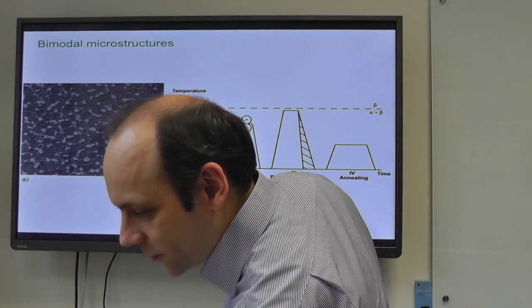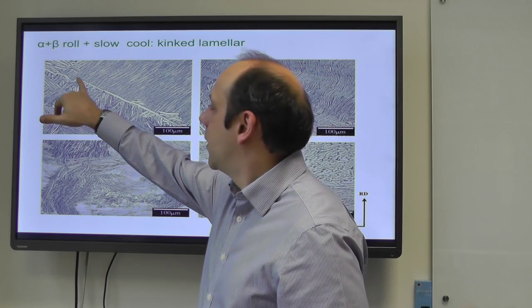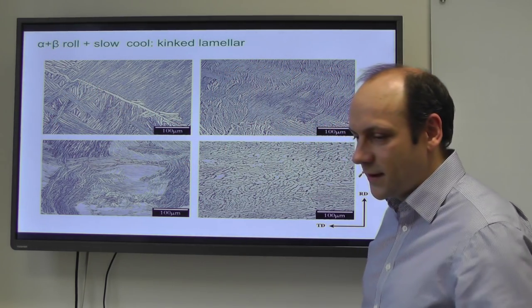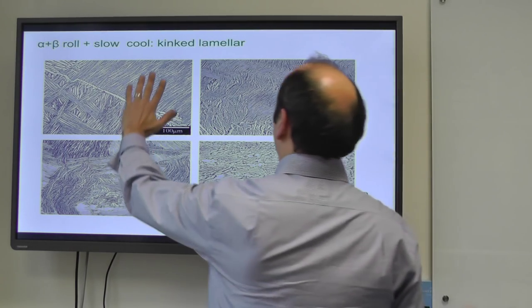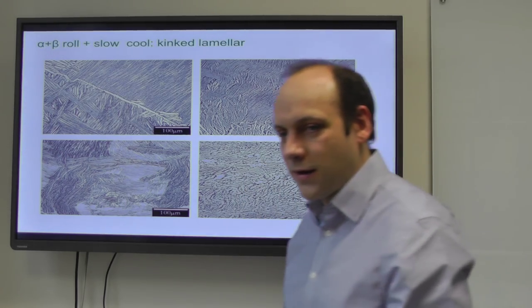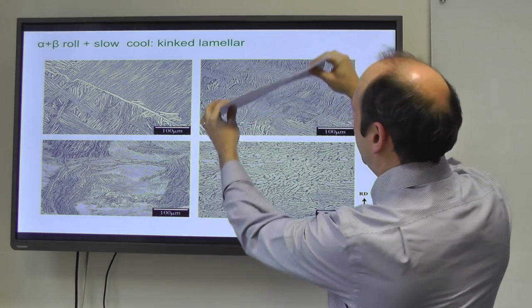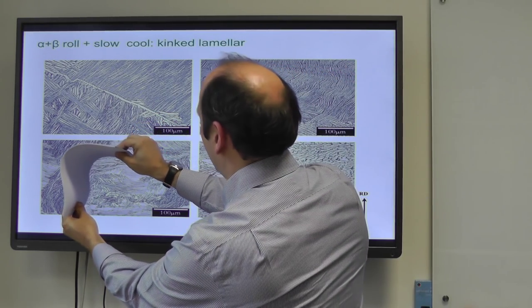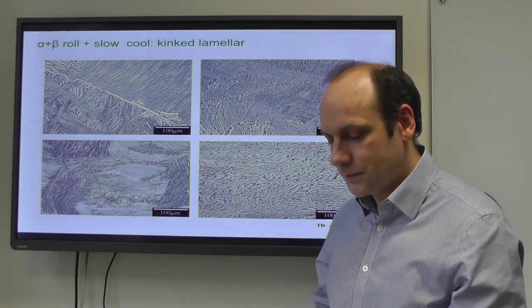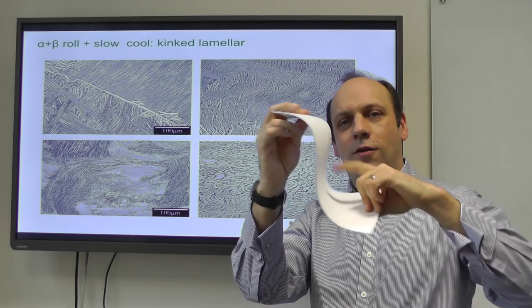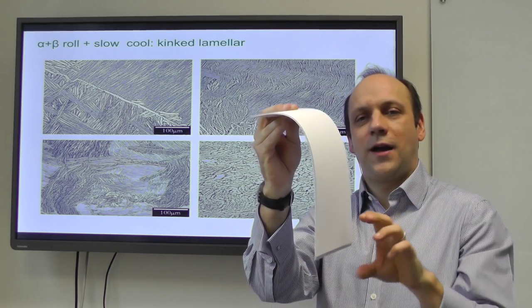Looking at how we generate that microstructure step by step - work done by PhD student John Warwick - starting from an initial structure cooled from the beta, as we go to 20%, 50%, and 80% deformation, the plates become kinked. It's like taking a sheet of paper and kinking it. You can see the plates have become kinked and are starting to recrystallize on their own during rolling. At regions of high curvature there are lots of dislocations, so the material breaks into cells - the plate pinches off at two regions of high curvature and breaks into separate grains.